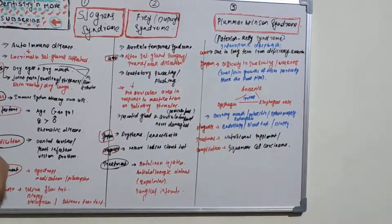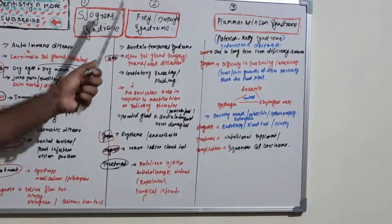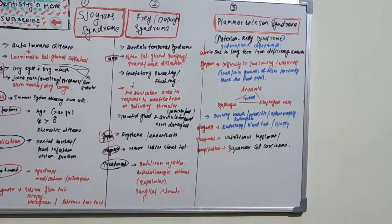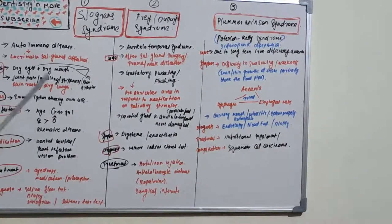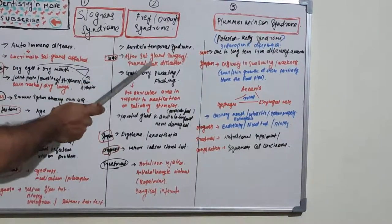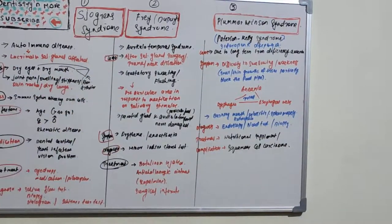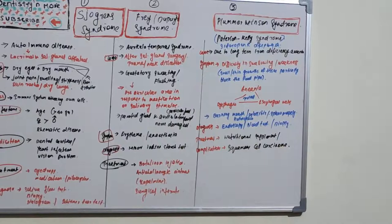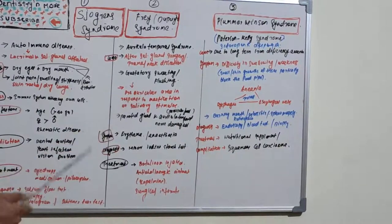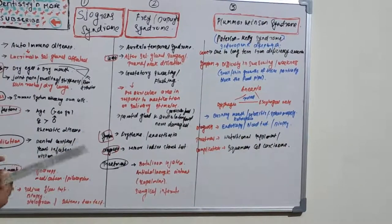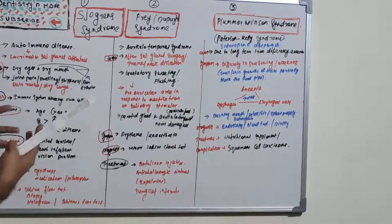Sjögren's syndrome and Frey syndrome both affect the salivary glands, but in Sjögren's it is an autoimmune disease, and in Frey's it is trauma to the auriculotemporal nerve and parotid gland.